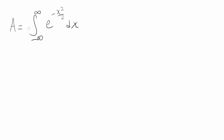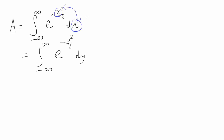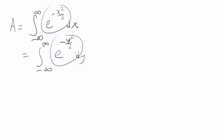A very intelligent and creative idea comes in. Let the integral from negative infinity to infinity of e to the negative x squared over 2 dx equal A — we want to find what A is. We can replace x with y: writing the integral of e to the negative y squared over 2 dy gives the same result, because x is just a dummy variable. Replacing x with y doesn't change the area or the equation.